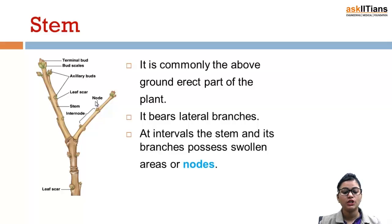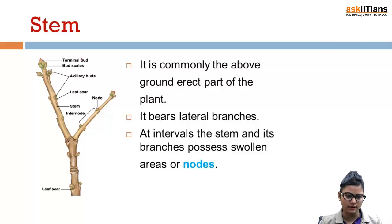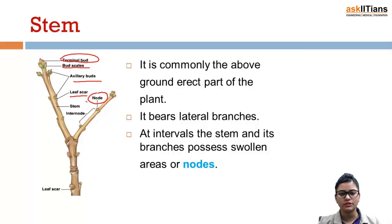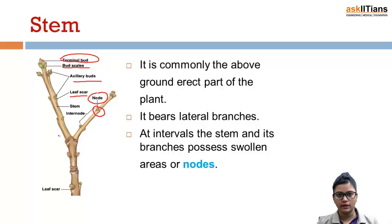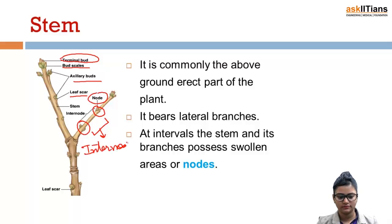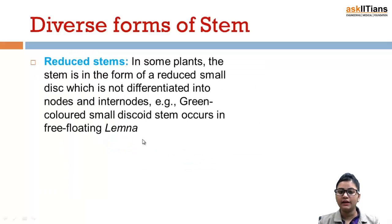The stem and its branches possess swollen areas called nodes. You can see in the diagram these are the terminal buds, bud scales, axillary buds, and leaf scars. At intervals, the stem possesses swollen areas known as nodes, and the distance between one node and the next is known as an internode.